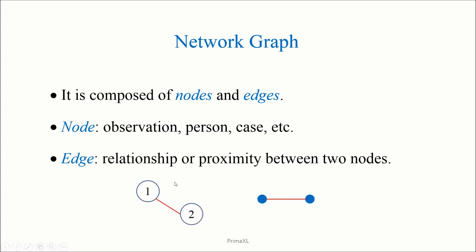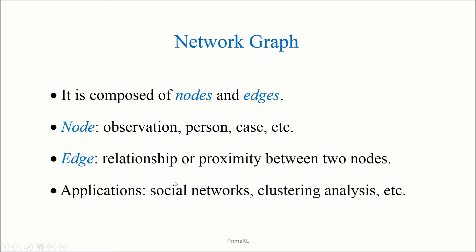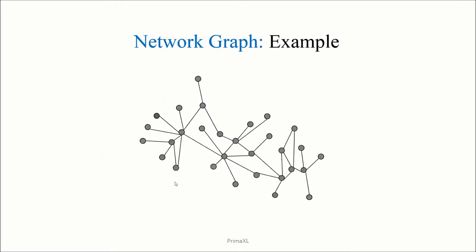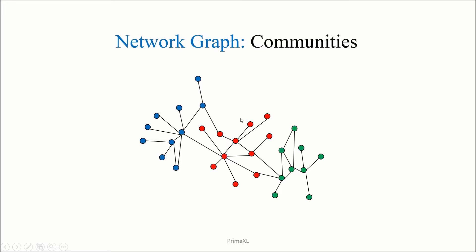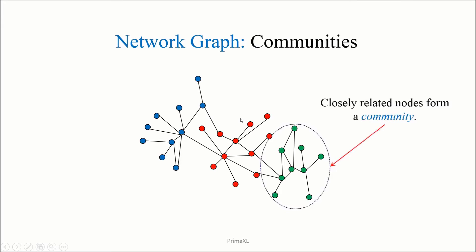Some of the applications of the network are social network analysis, clustering analysis, among others. Here we can see an example of a network graph. We have the nodes which are connected by undirected edges, and there's no direction in the connections. The closely related nodes may form a community or a cluster. The different communities are shown here in different colors.